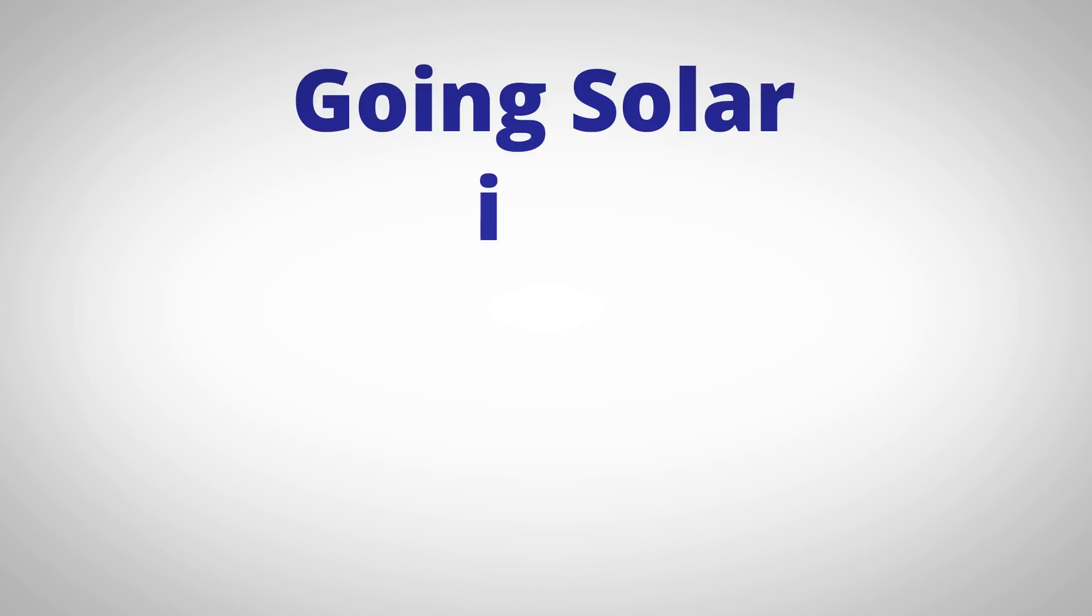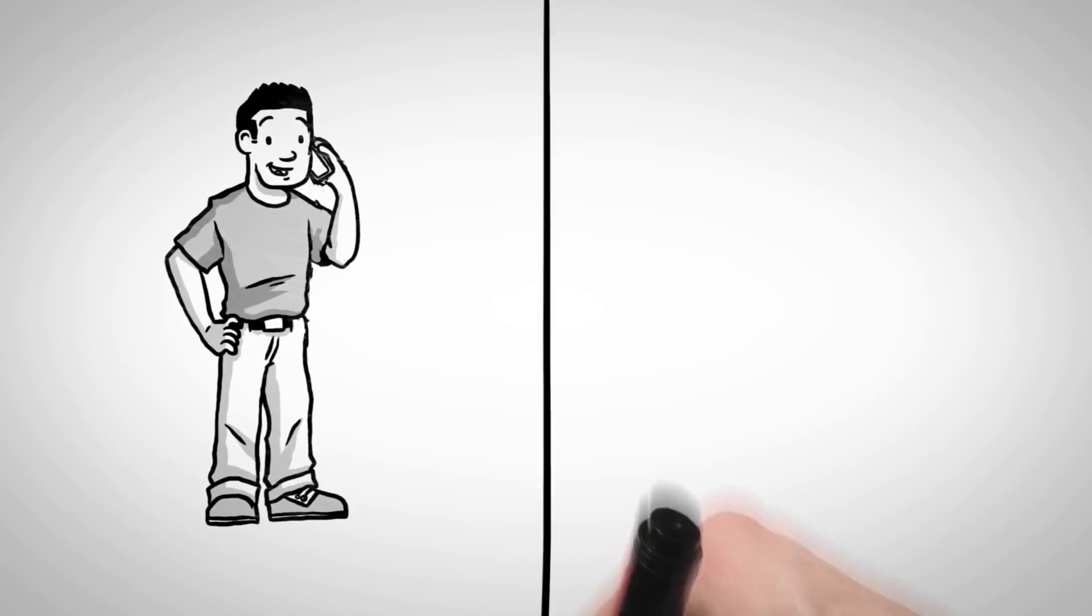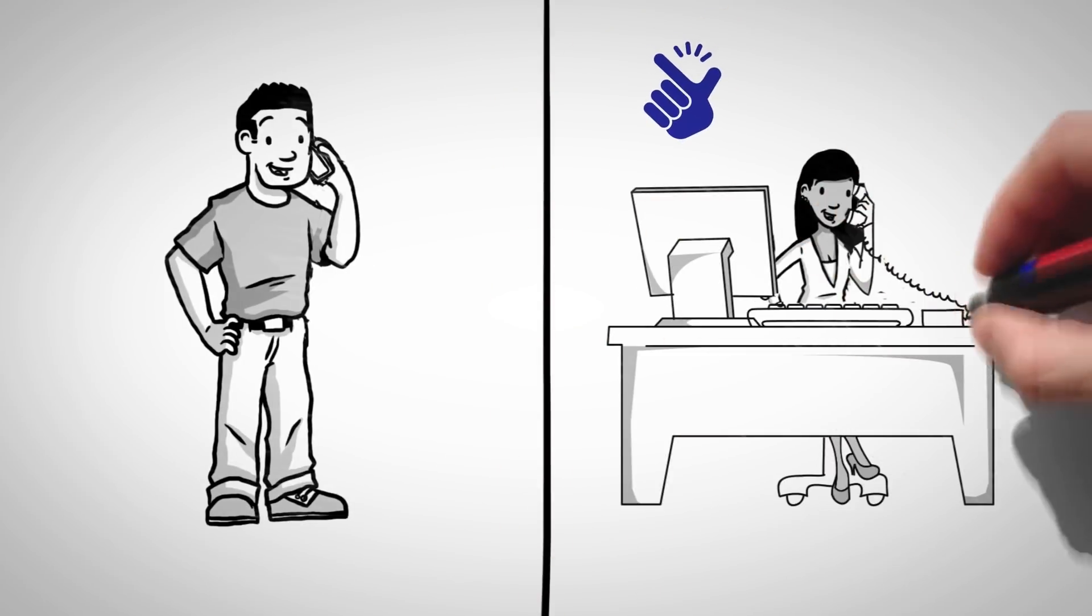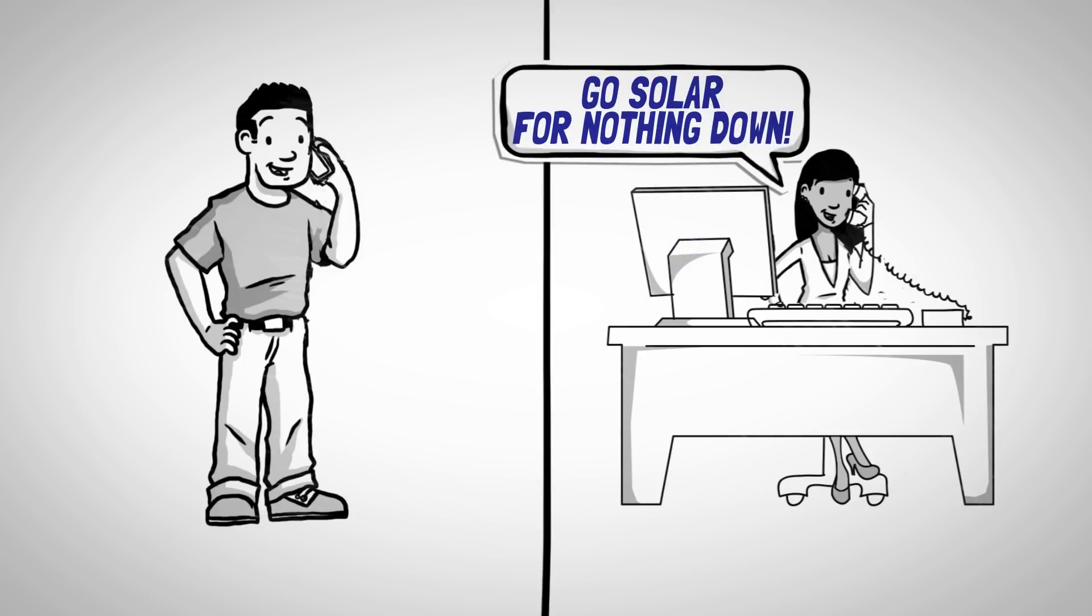We make going solar as easy as 1-2-3. 1. Call Planet Solar and one of our friendly experts will show you how easy and how much money you can really save. You can even go solar for nothing down and savings of up to 60% each month.